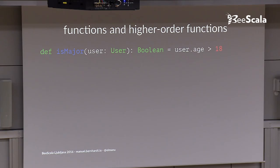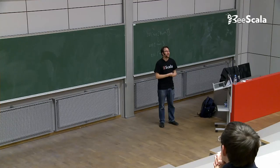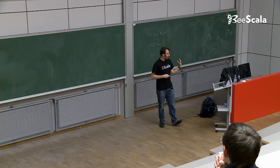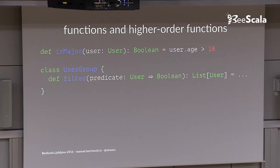And then the third one, of course, are functions. Higher order functions. So here I have an example. That's a function. I have an isMajor function that takes a user and checks whether the user's age is greater than 18. Very simple, it returns a Boolean. Now let's imagine that I have a user group. And that group has a filter method or function that takes a predicate, which is a function itself from user to Boolean. So this is a function that takes another function as an argument. It's called a higher order function. That's it. It's a scary name, but it's not so scary what it is. It may also return a function, that's also a higher order function.